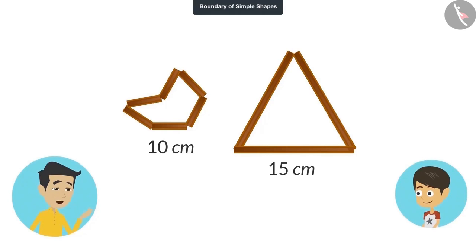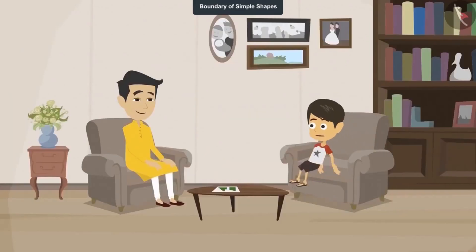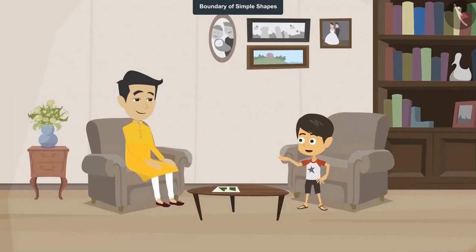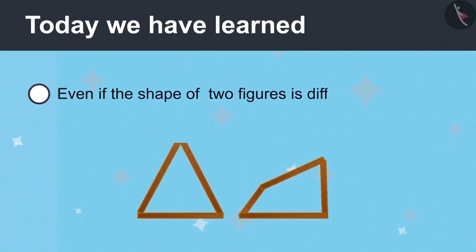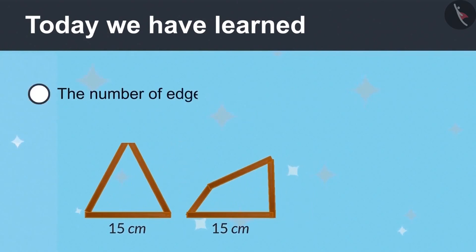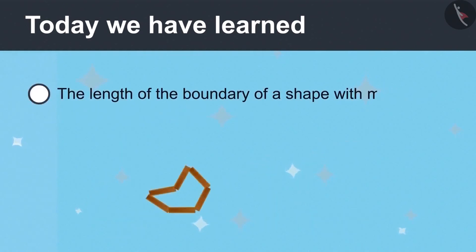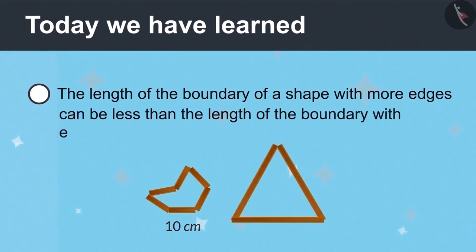Absolutely right. That means the number of edges of a shape does not affect the length of its boundary. Yes, now I understand. Today we have learned that even if the shape of two figures is different, the length of their boundaries can be the same. And the number of edges of a shape does not affect the length of its boundary. The length of the boundary of a shape with more edges can be less than the length of the boundary of a shape with fewer edges.